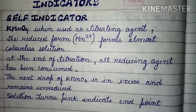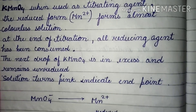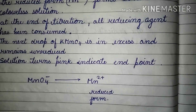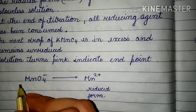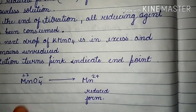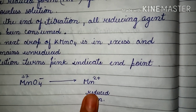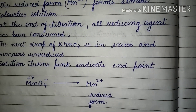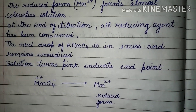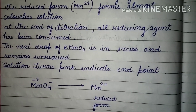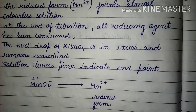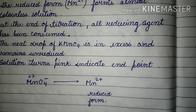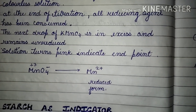Here MnO4⁻ is reduced to Mn²⁺. Manganese has a +7 oxidation state in MnO4⁻ and gets reduced to Mn²⁺. In this way, the self indicator helps in detecting the endpoint in the redox titration method.